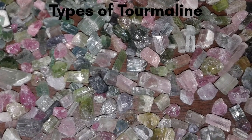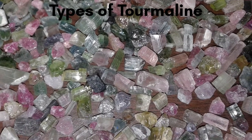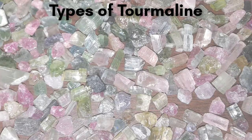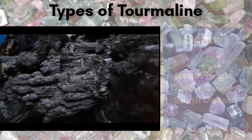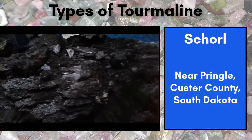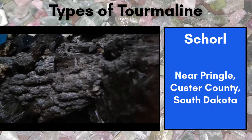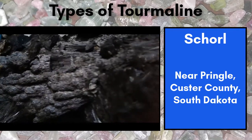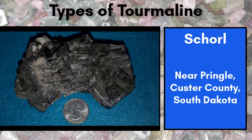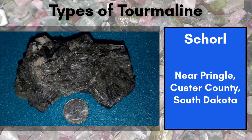Despite the array of color possibilities, the vast majority of tourmaline is black — like my soul. This tourmaline is called schorl, and makes up about 90 to 95% of tourmaline that occurs in nature. Yes, I'm schorl about that.